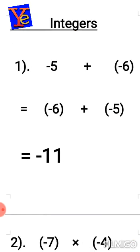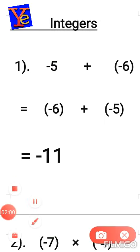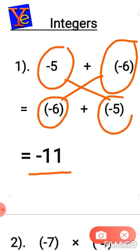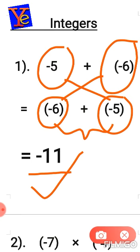Now let's move to integers. Does the commutative property hold under addition and multiplication for integers? Let's check: if I add minus five and minus six, I get minus eleven. If I switch the positions — minus six first, then minus five — I again get minus eleven. This means integers are commutative under addition.